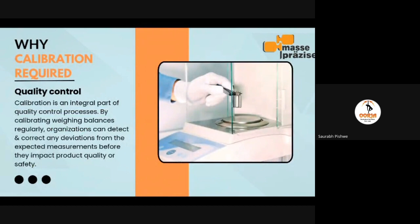The third reason is quality control. Calibration is an integral part of the quality control process. By regularly calibrating weighing balances, organizations can detect and correct any variation from expected measurements before they impact product quality or safety.